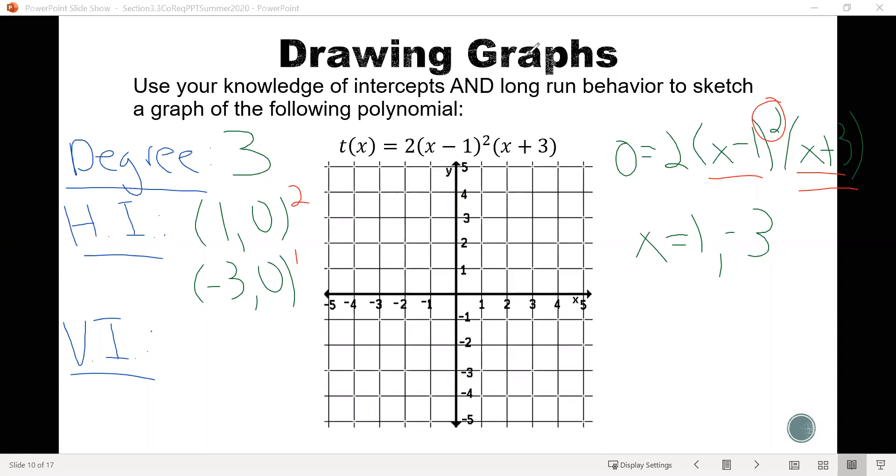And then we can find our vertical intercept by plugging in 0 to the function. So we do t of 0 equals 2 times 0 minus 1 squared times 0 plus 3. Which gives us 2 times negative 1 squared times 3, which would give us 2 times 3, which is 6. So we see our vertical intercept is at 0, 6.